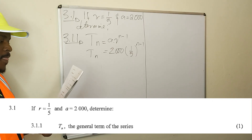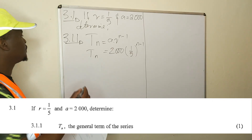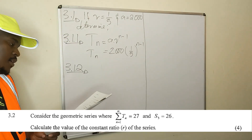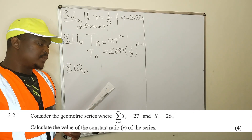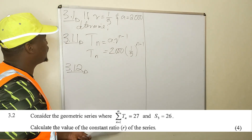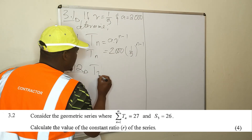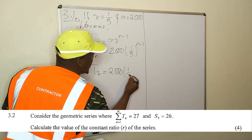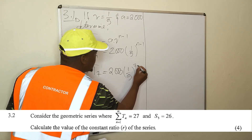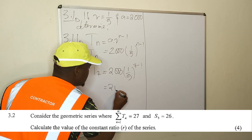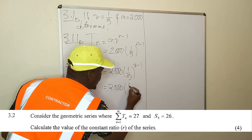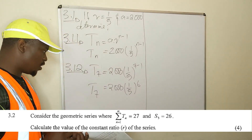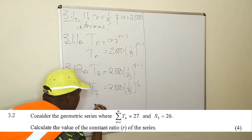For 3.1.2, we need to determine T₇, term number 7. So T₇ = 2000 × (1/5)^(7−1) = 2000 × (1/5)^6. We punch that into our calculator to find the value of term number 7.